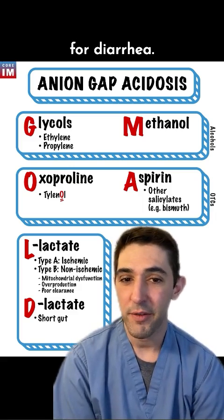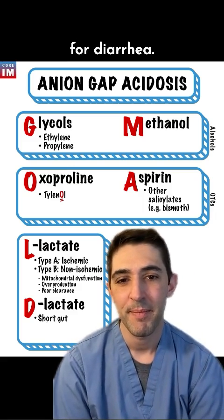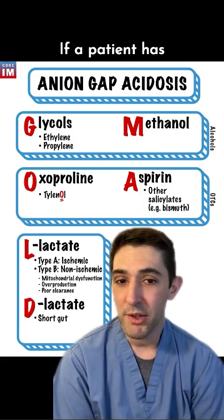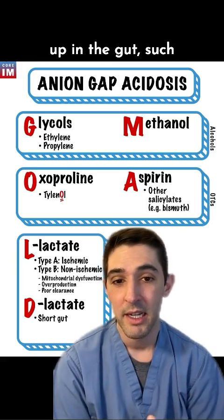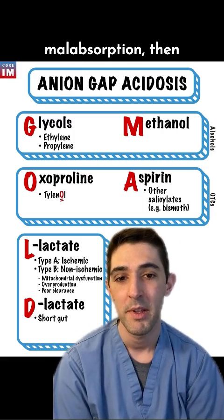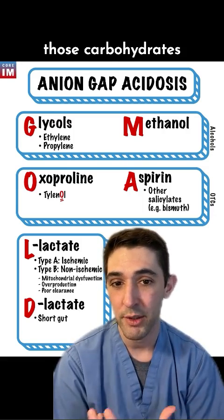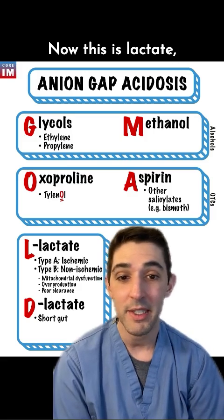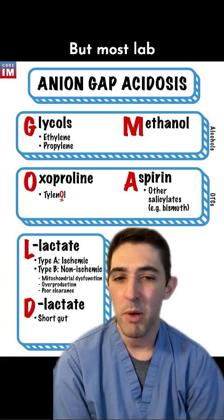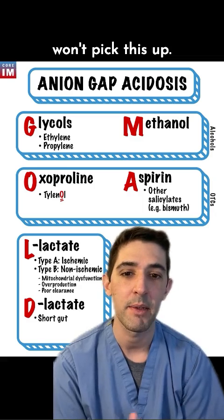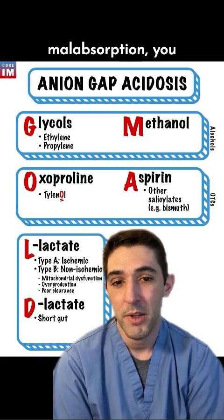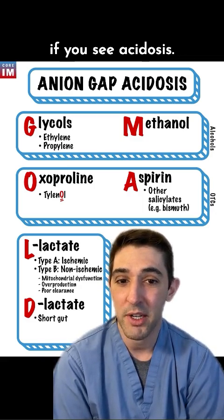Finally, we have D-lactate — think D for diarrhea. This isn't a product of our own cells, but of the bacteria that live in our gut. If a patient has a disorder where carbohydrates build up in the gut — such as those with a history of GI surgery or carbohydrate malabsorption — bacteria will consume those carbohydrates and convert them into D-lactate. It does get absorbed into the blood and can cause acidosis, but most lab assays for lactate won't detect it, so you must maintain a high clinical suspicion in these patients.